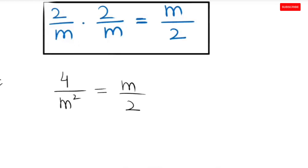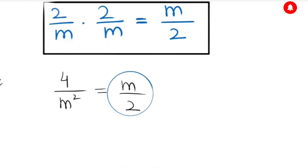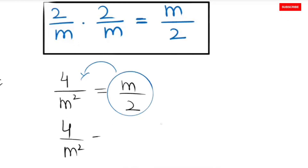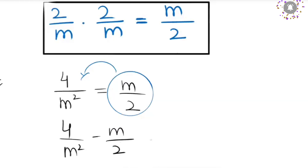Next, I am going to take m over 2 to the left-hand side, so this turns to 4 over m squared minus m over 2 is equal to 0.